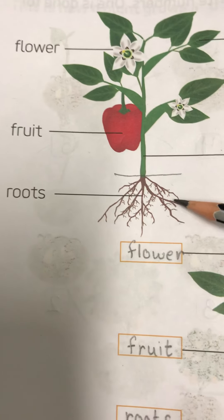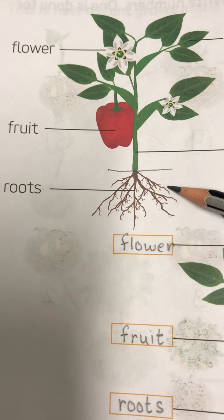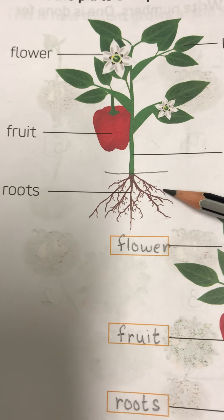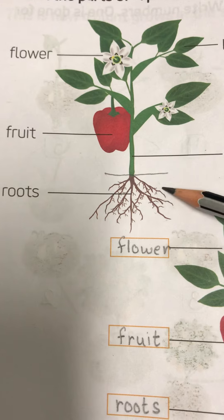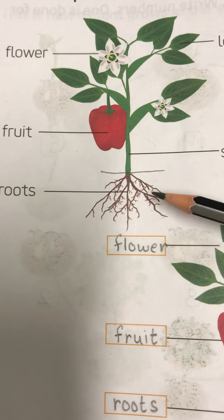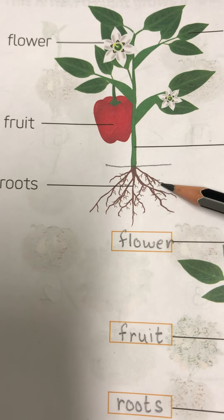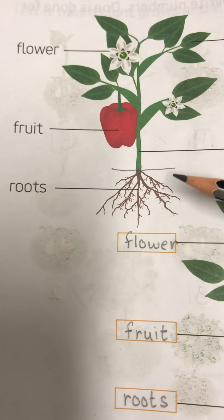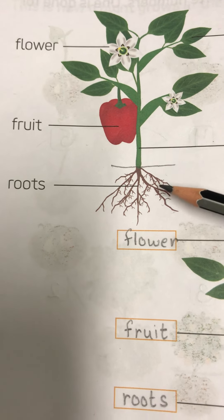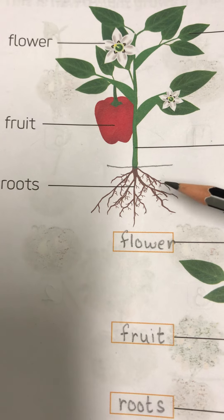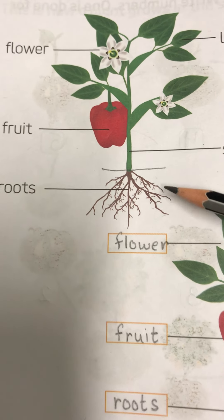Now I will discuss all the parts of a plant one by one. The first part is the root part. As I already told you, roots are under the ground. So when we water the plant, the roots absorb moisture and nutrients which are required for the growth of the plant.